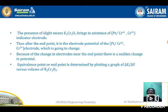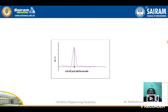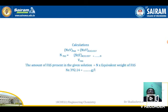The equivalence point is determined by plotting a graph of ΔE/ΔV against the volume of potassium dichromate added. On the x-axis, plot the volume of potassium dichromate added; on the y-axis, plot ΔE/ΔV values. You will get a peak, and at the center you draw a line marking the equivalence point. This gives the volume of potassium dichromate required for the experiment.